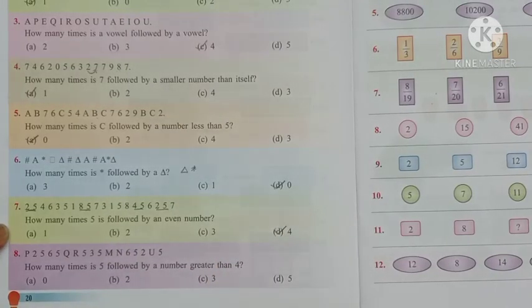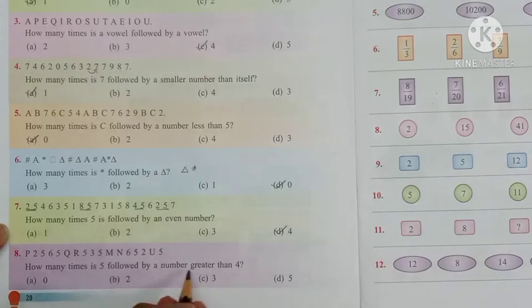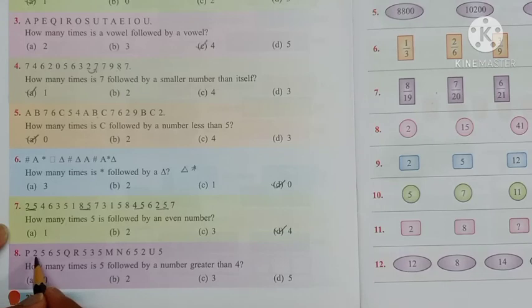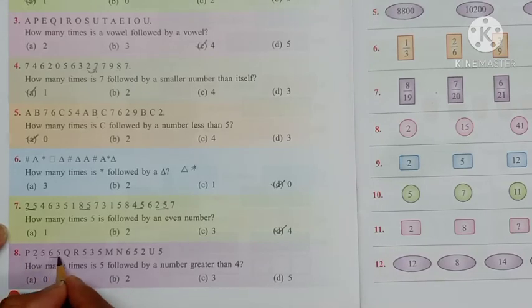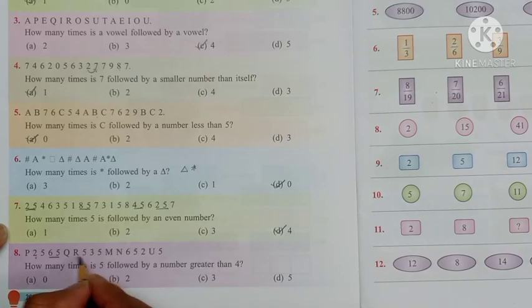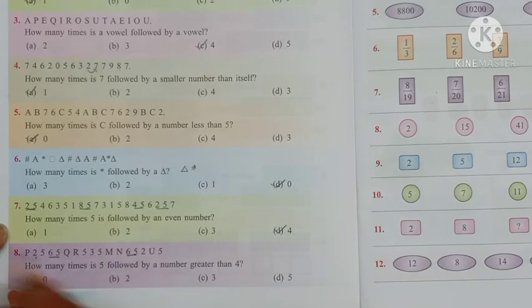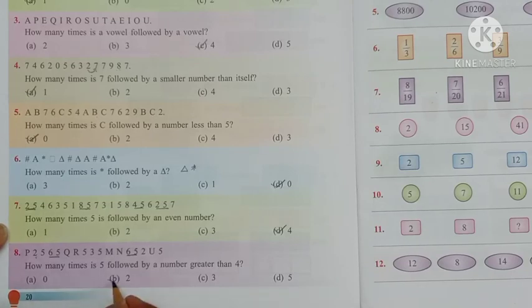Next eighth question children. How many times is 5 followed by a number greater than 4. 5 followed by a number greater than 4. 2 is less than 4. C. 5, 6. Alphabet, so there is no chance. Yeah again 5, 6. So we can get two such combinations. So mark option B as the answer.